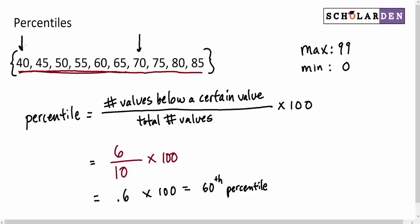In the example we're looking at here, 40 is in the 0 percentile because what number of values are below 40? Zero. So if we use this formula, we'd have 0 below 40 out of a total of 10 times 100, and we get 0 times 100, or a 0 percentile. So that's possible.